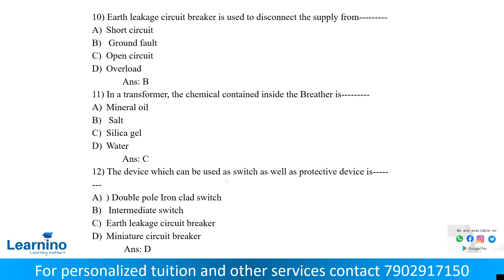An earth leakage circuit breaker is used to disconnect the supply during a ground fault — an inadvertent contact between the line and the ground or a grounded equipment frame. The answer is B.